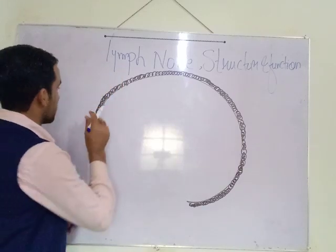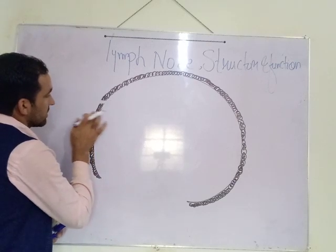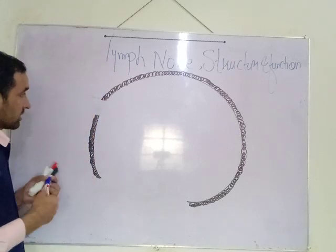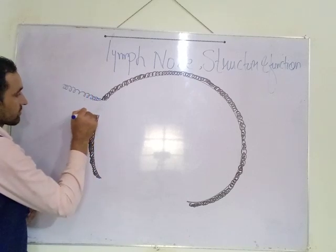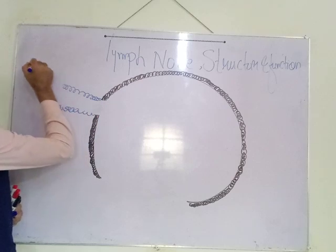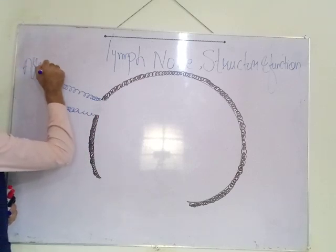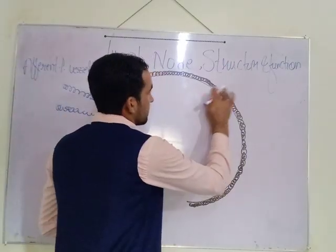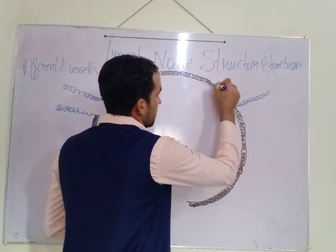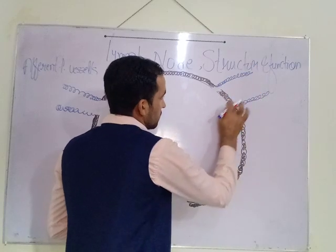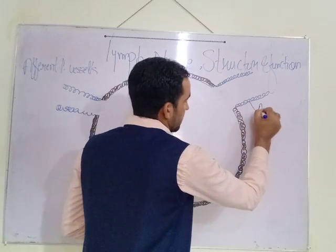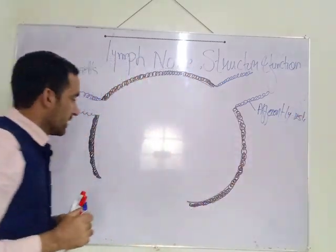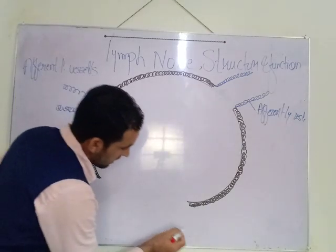On the concave surface there is an entry point for afferent lymph vessels. Lymph comes to the lymph node through afferent lymphatic vessels — these are the afferent lymphatic vessels. On the concave surface, arteries are also approaching the lymph node.